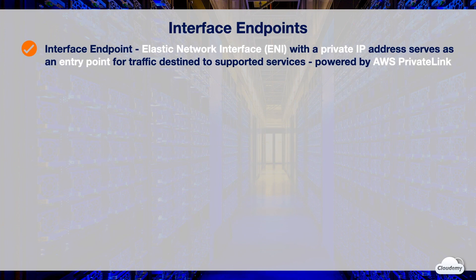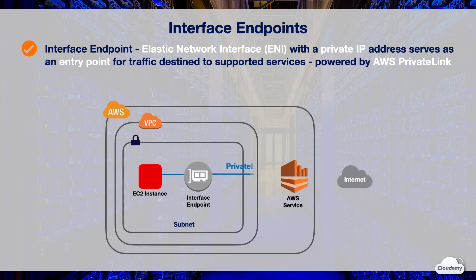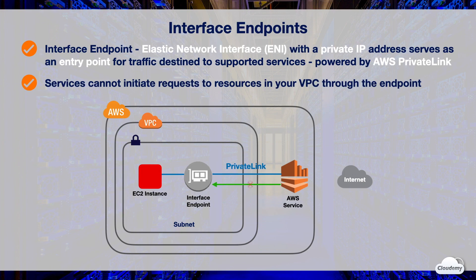An interface endpoint is an elastic network interface, or ENI, with a private IP address from the IP address range of your subnet that serves as an entry point for traffic destined to supported services. These services include some AWS services, endpoint services, and supported partner services in AWS Marketplace. Interface endpoints are powered by AWS PrivateLink, a technology that enables you to privately access services by using private IP addresses. AWS PrivateLink restricts all network traffic between your VPC and services to the Amazon network.